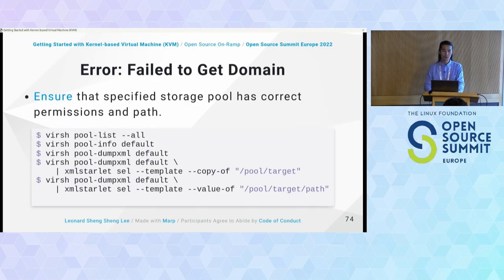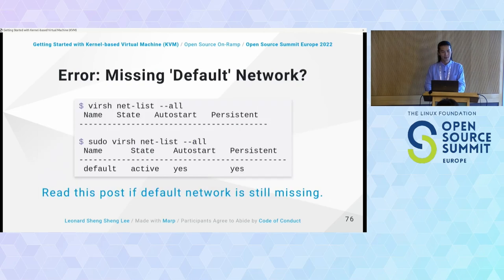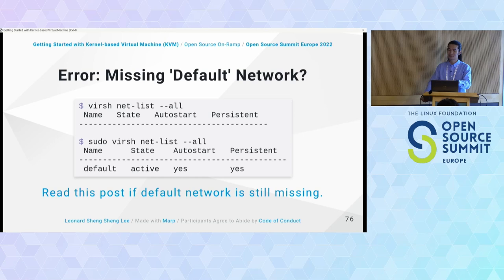If you encounter 'failed to get domain', check that the storage pool has correct permissions and the correct path. For 'cannot access storage file' errors from QEMU, make sure you've appended yourself to the QEMU configuration and proper groups. Sometimes if you used sudo for group setup, you'll face issues listing the default network.